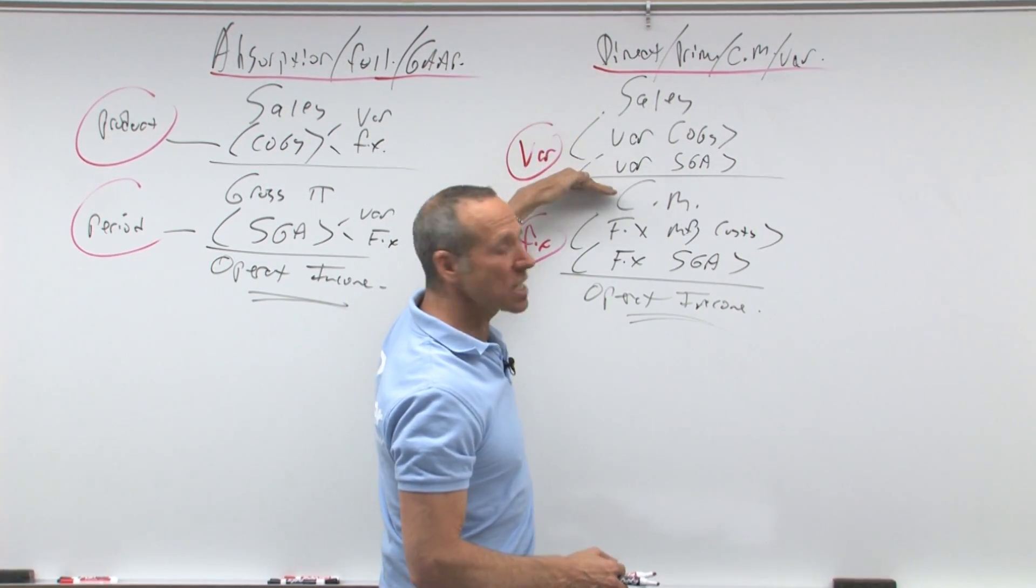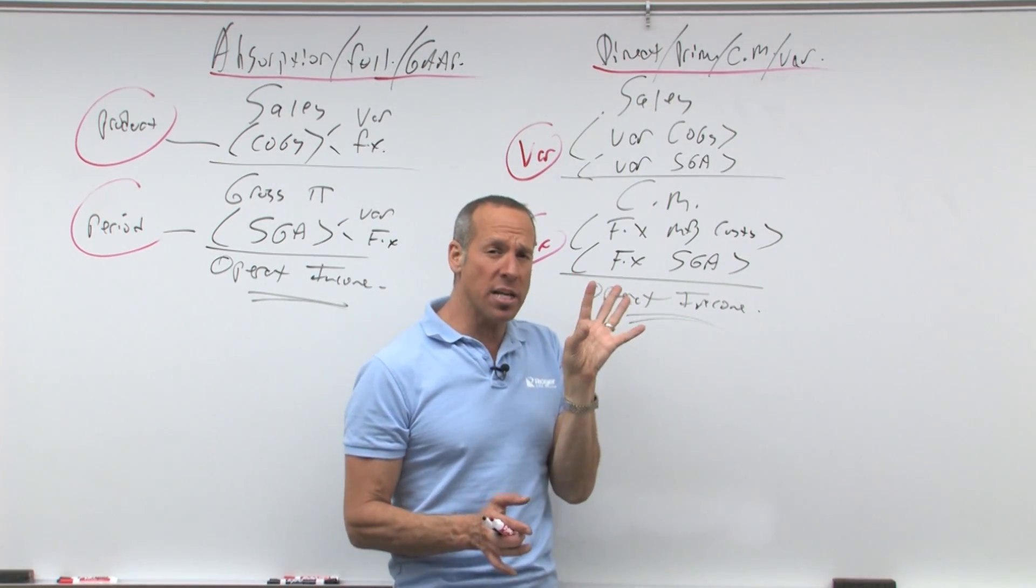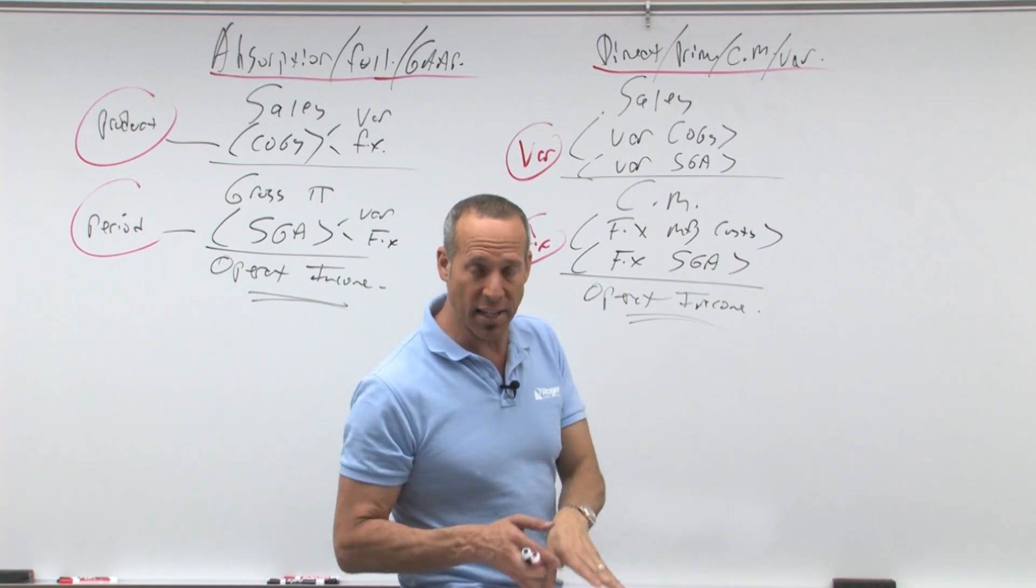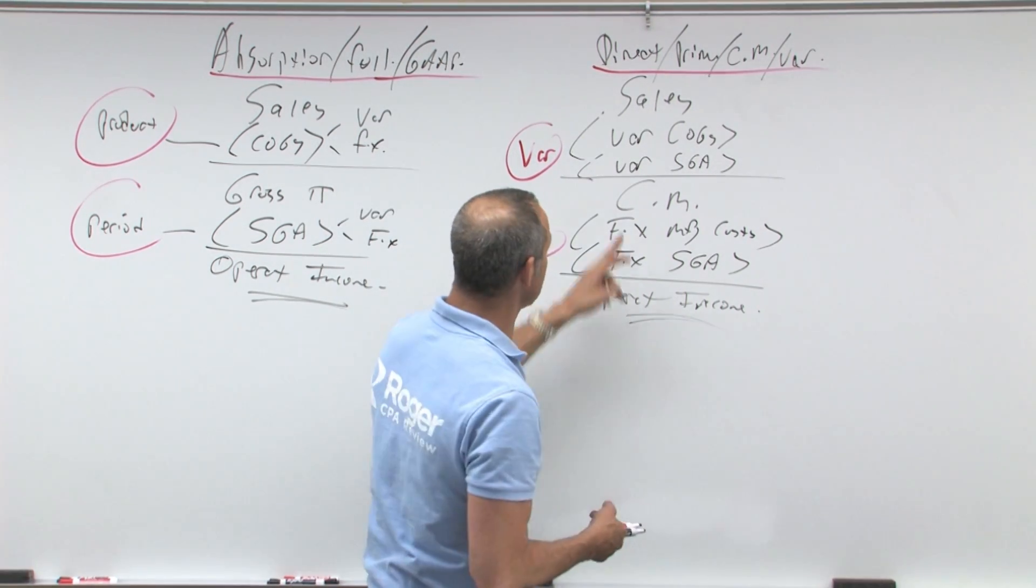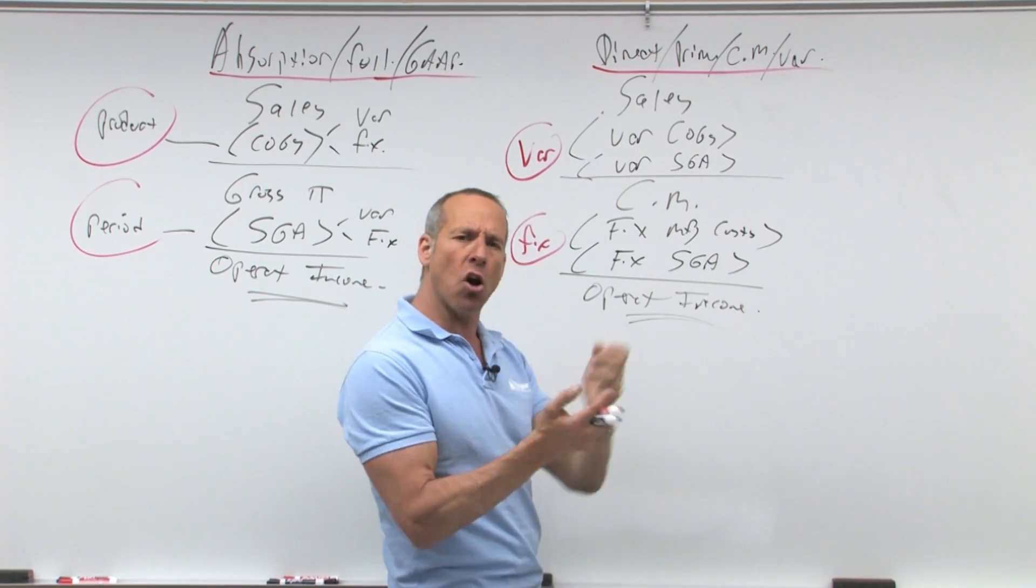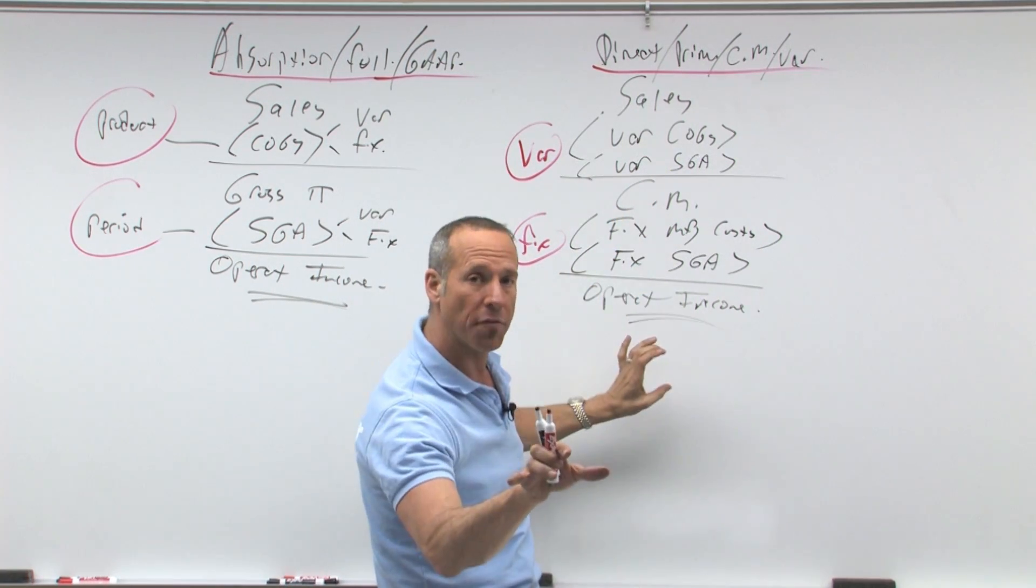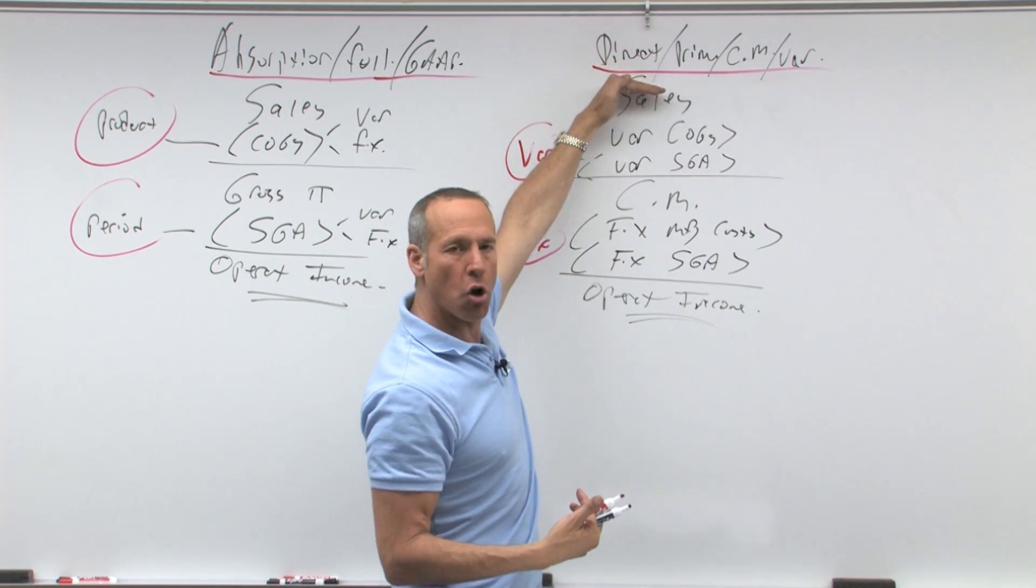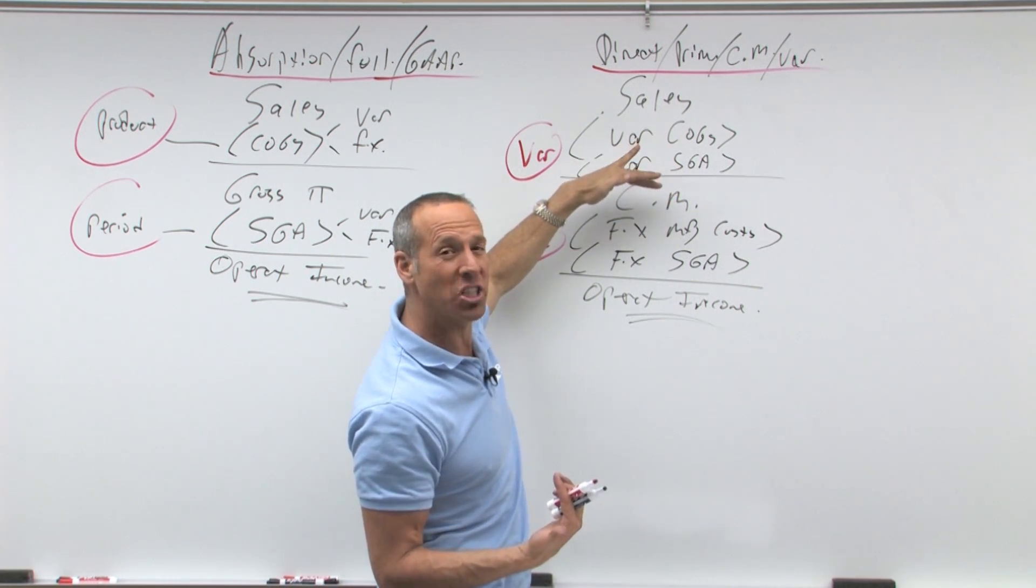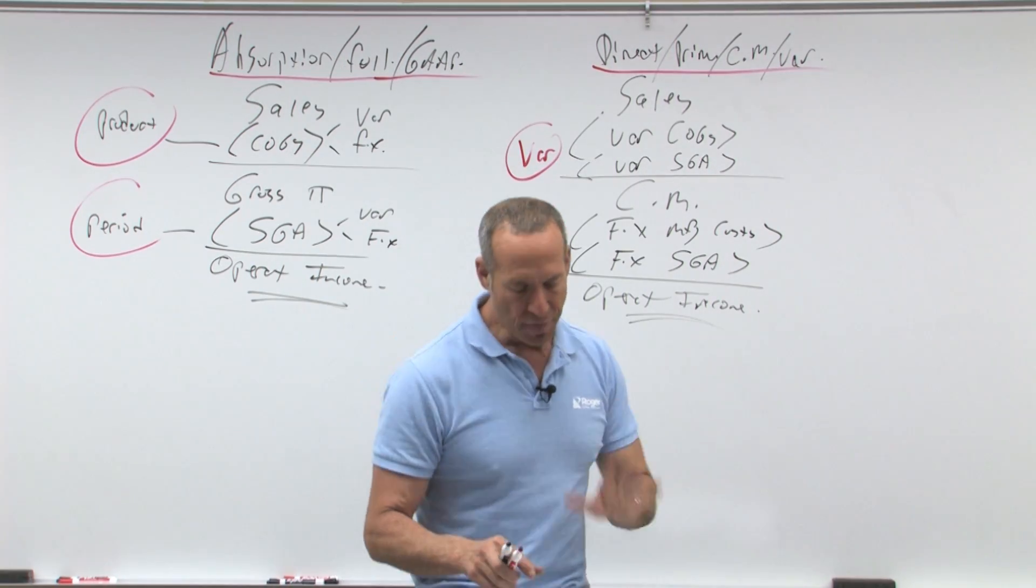So it's sales minus variable cost is CM. What does CM mean? It stands for contribution margin. We're going to use this in the next section for break-even analysis. CM means how much money is left over after deducting variable costs to contribute to fixed costs and profit. How much is left over from revenue, sales, after deducting variable costs to contribute? What is the margin left to contribute to fixed and profit? That's what the difference is.